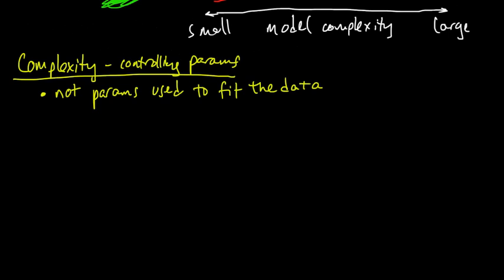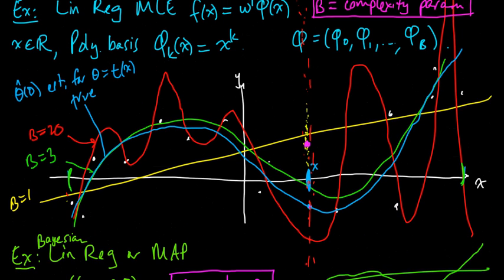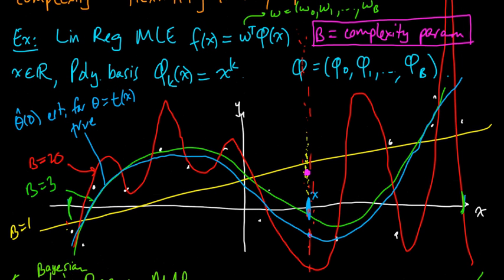So what does this mean? Remember back up here to the regression example, always a good example to think about. The vector w was being used to fit the data, right? We choose a particular value of w for a particular basis function in order to try to get it near the data.